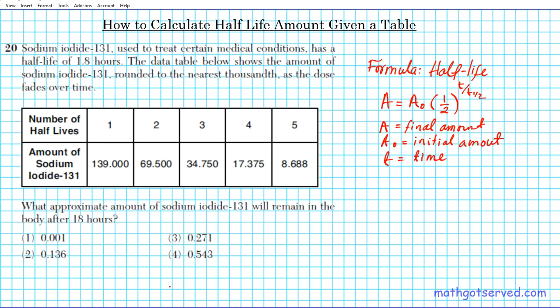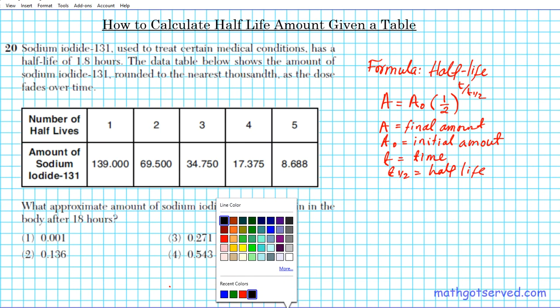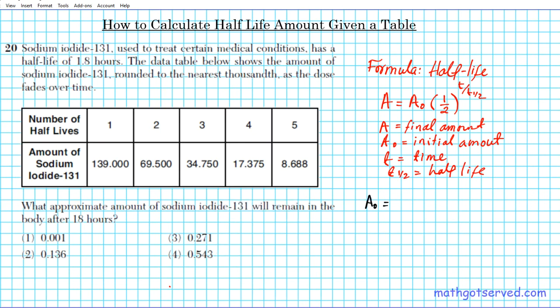A is the final amount, A sub 0 is the initial amount we started with, t is the time, and t sub one-half is your half-life. In this particular problem we need to start by finding what A sub 0 is. A sub 0 is initial amount, but if you look at this table it tells us the amount after one hour.